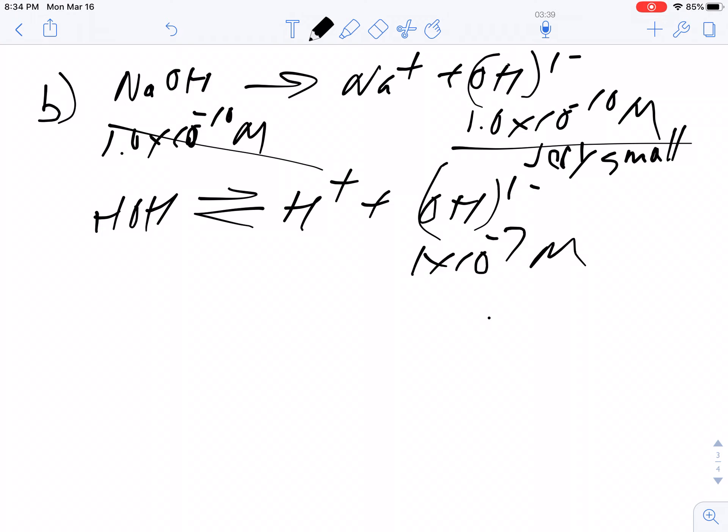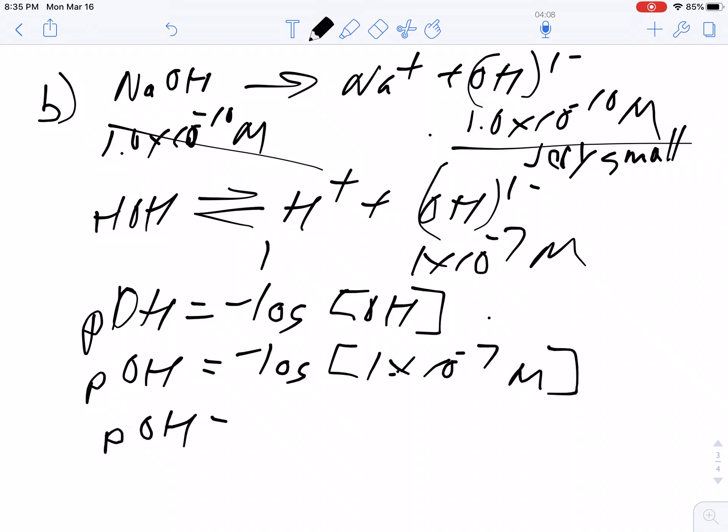So when we calculate the pH, we can do the pOH first to be consistent. My pOH is negative log of 1 times 10^-7, so my pOH is 7, and therefore my pH is 7 as well.